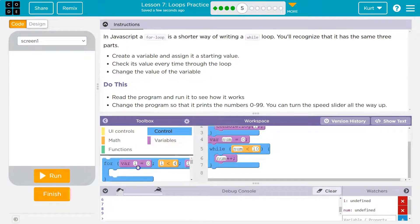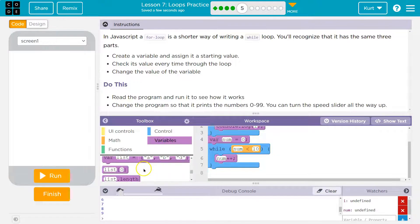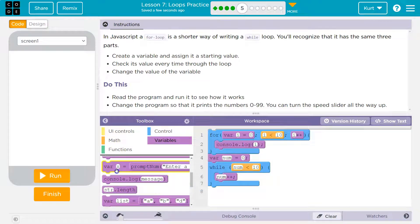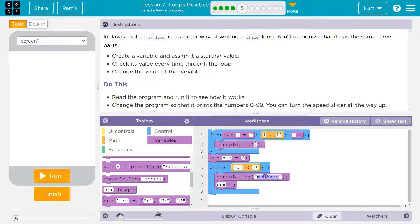So now they want us to print out the numbers. I need to go to—oh, there it is. console.log is under Variables. I'm going to put that right here. And what am I going to print out? I'm going to delete all that because I'm just going to print out num.